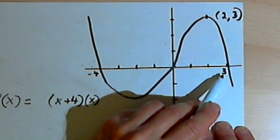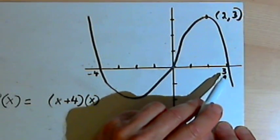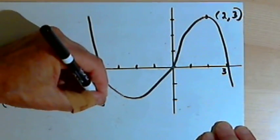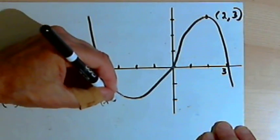And it goes through x equals positive 3. So a third factor is going to be x minus 3.